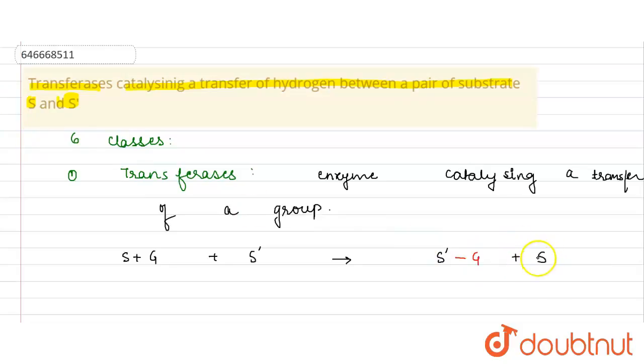Now there is no transfer of just hydrogen between the pair of the substrate. The group can be any group. In the definition itself it has been mentioned that the group can be any group, and of course the G group over here should be other than hydrogen.